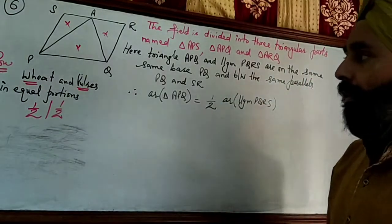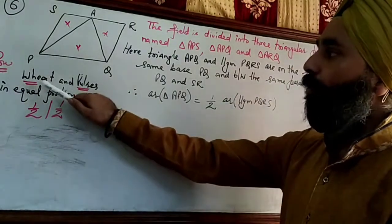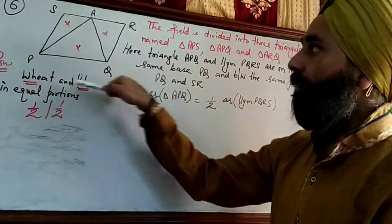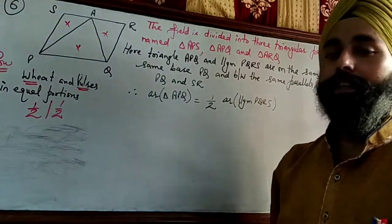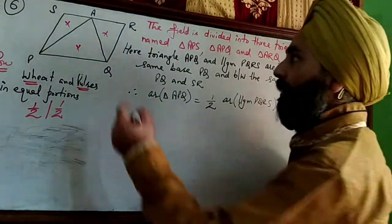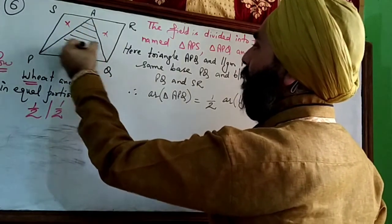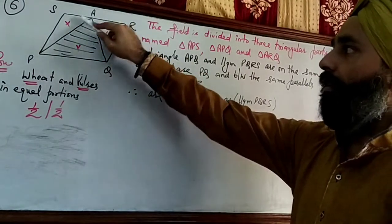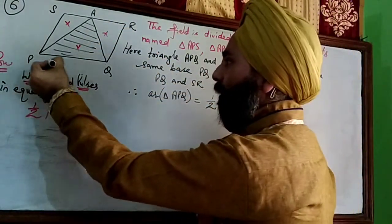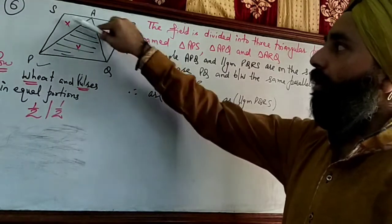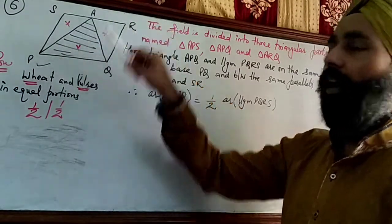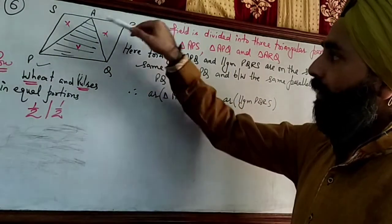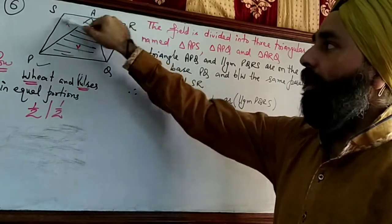According to the question, the farmer wants to sow wheat and pulses in equal portions. This area is half of the complete field. So we can say wheat the farmer can sow in this portion, and the rest of the portion, that is again half of the field, pulses can be sown there. Or here pulses, and rest of the portion wheat.